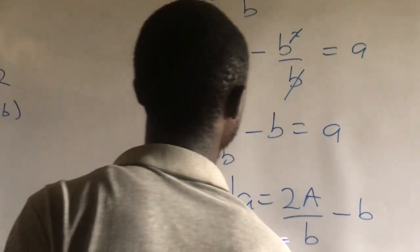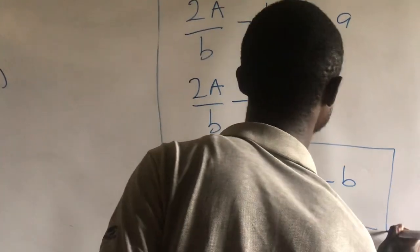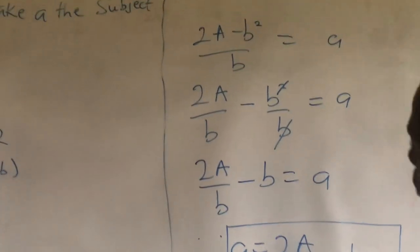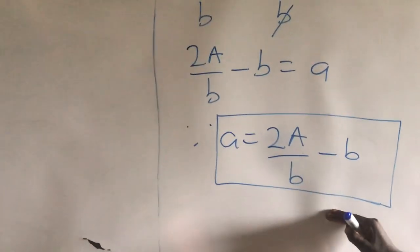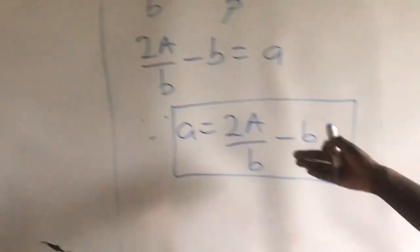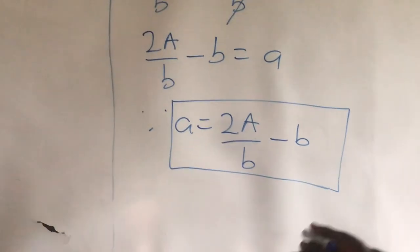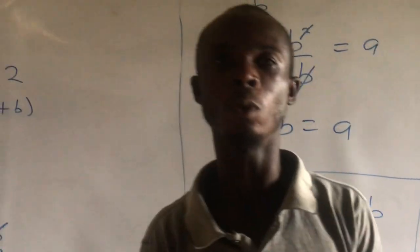This is our answer. So in an objective, they can leave your answer in this way or this way. So you must check how they plot the answer, but this is the right answer. Thank you and I believe you have really enjoyed this lesson.